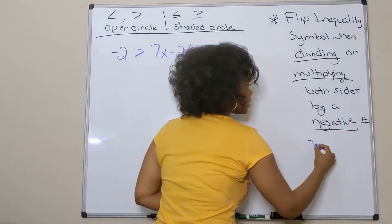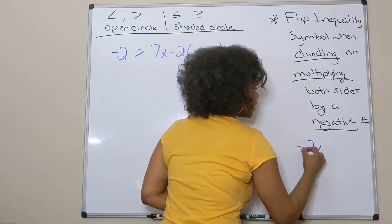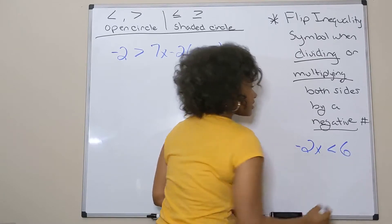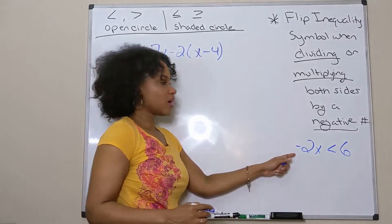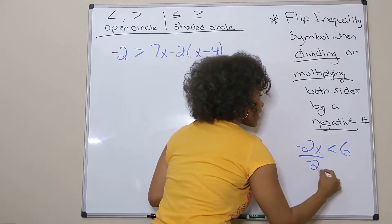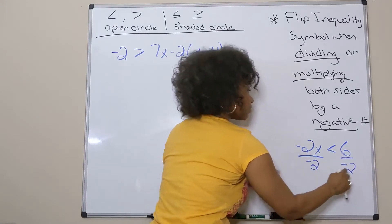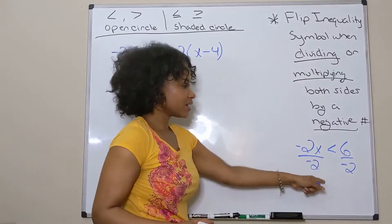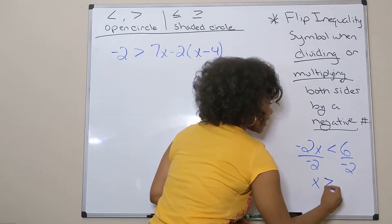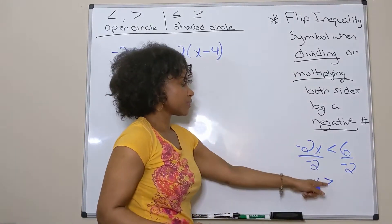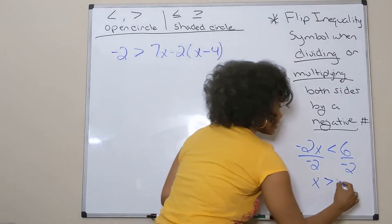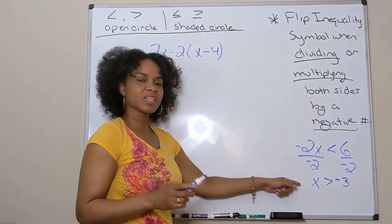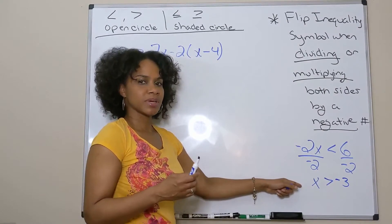So as an example, if I have negative 2x is less than 6, to solve that inequality, I'm going to divide both sides by negative 2. And since I'm dividing both sides by a negative 2, my inequality symbol flips from less than to greater than. That's the only added piece when you're solving multi-step inequalities.